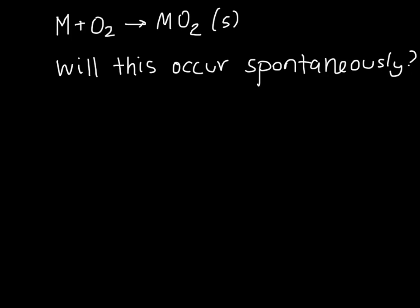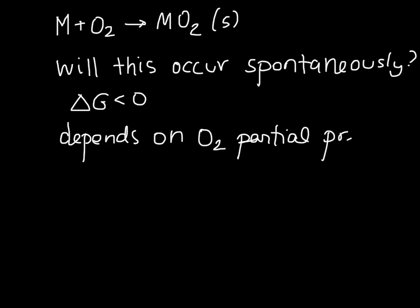So we know from before that this will occur spontaneously if delta G is less than zero. We will see later on that this depends on the oxygen partial pressure. So basically it depends on how much O2 we have available on whether or not the reaction will move in this direction,